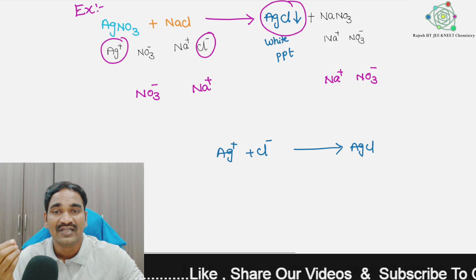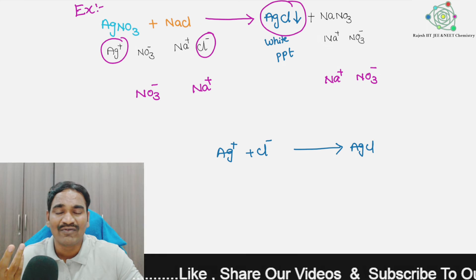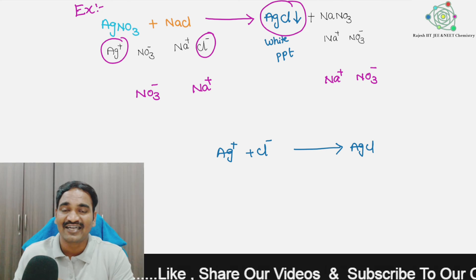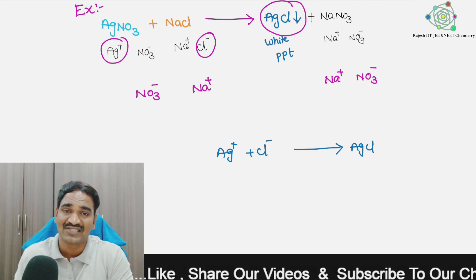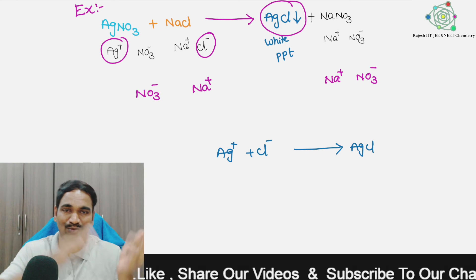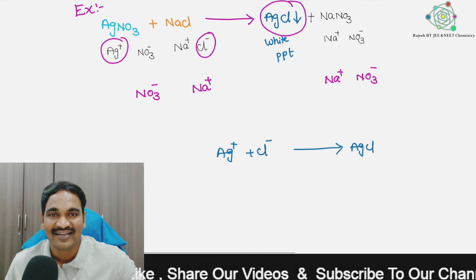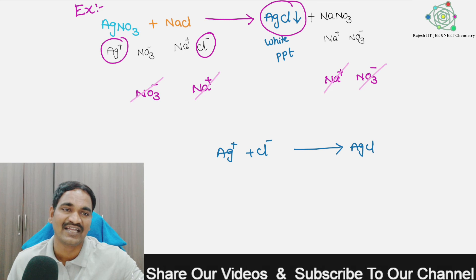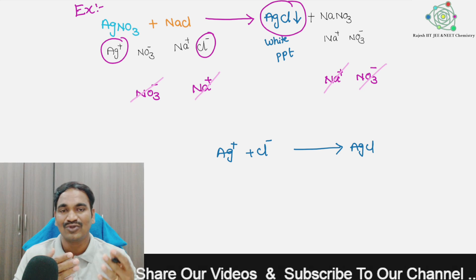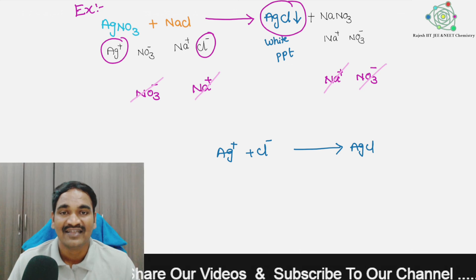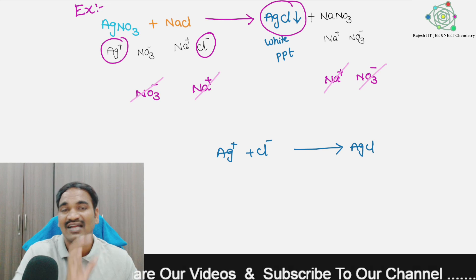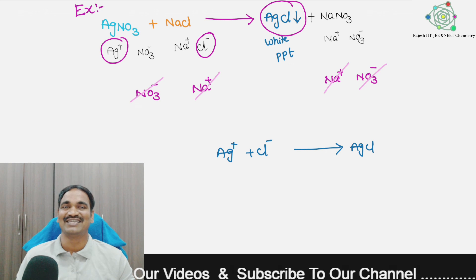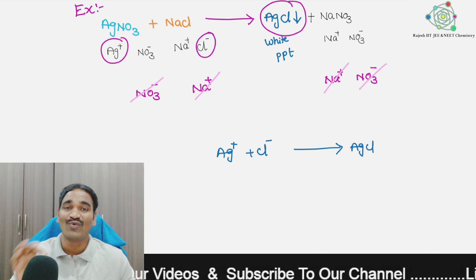Why can we do this? Because the spectator ions are the same on both sides — they cancel out. Simply, the ions which are participating in the precipitation reaction are what we write in the ionic form of the reaction. This is about spectator ions and their use. Thanks for watching.